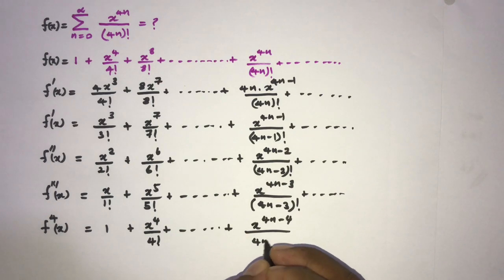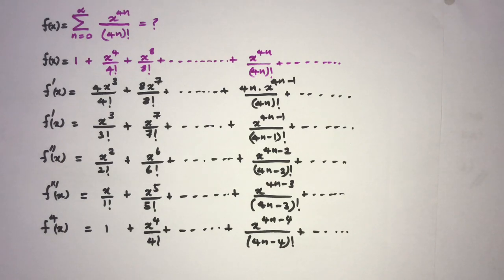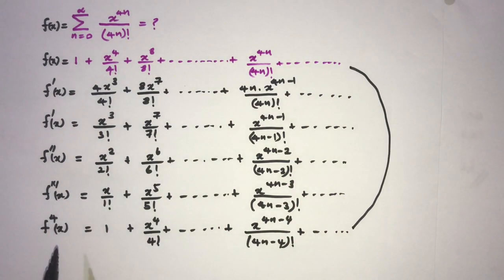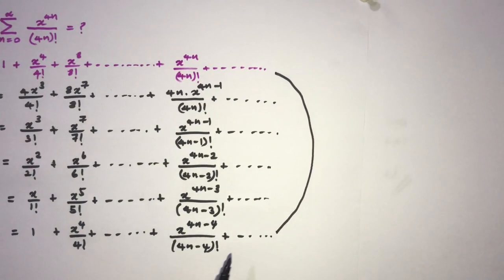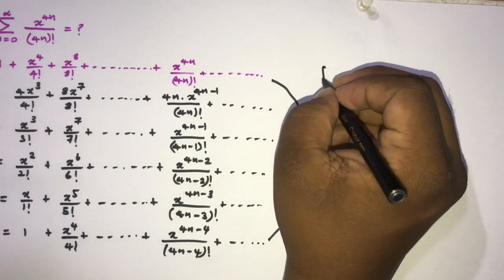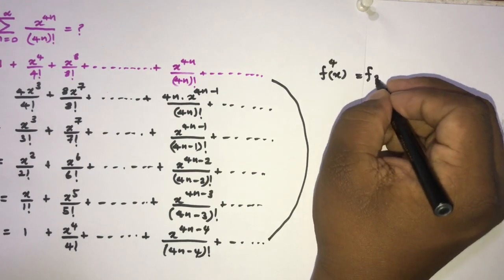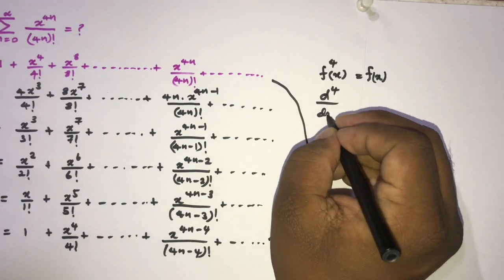Plus x to the 4n over 4n factorial, plus so on. Now look carefully — we know f of x is equal to the fourth derivative of f of x. The fourth derivative of the function equals the function itself, so we can write: d to the fourth over dx to the fourth of f of x equals f of x.